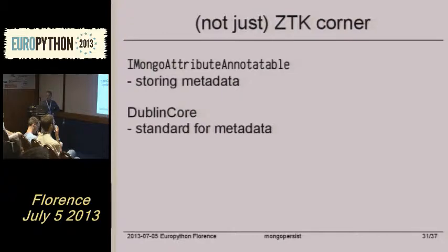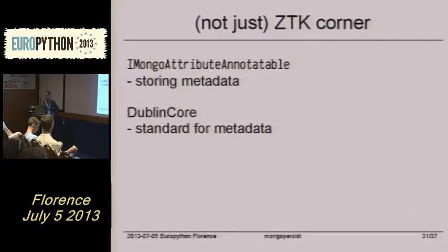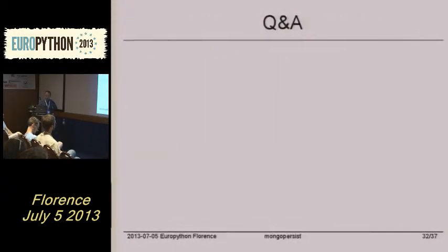Annotations is also a nice feature of ZTK or ZOPE. You can store metadata on any object, something like Dublin Core or permissions. Dublin Core is a standard for metadata — like created and modified — which is usually used with documents. Those get automatically updated by ZOPE events. But you don't have to care about this if you are not using ZTK or ZOPE. And that was it.